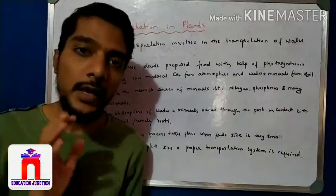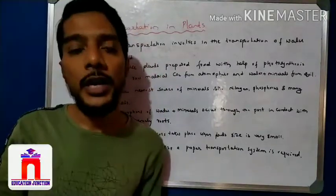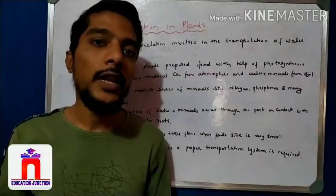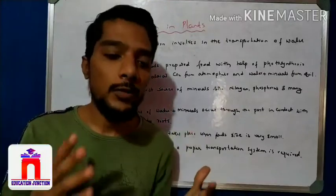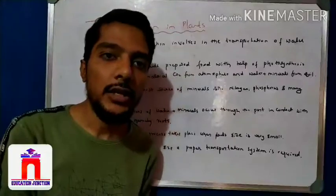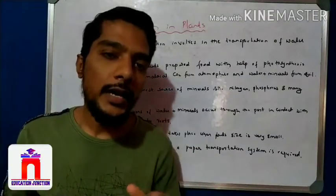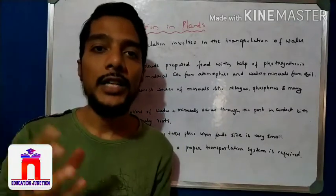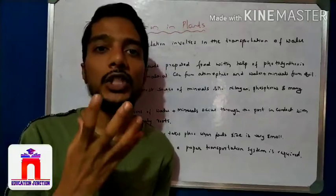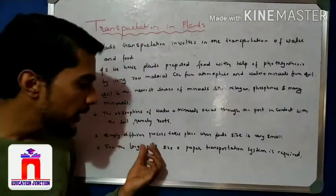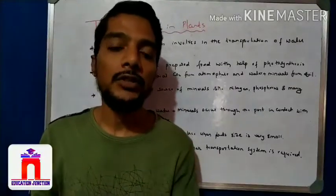When you come across very big trees — for example, coconut tree, banyan tree, mango tree — the distance between root and leaf is very large. In that condition, simple diffusion process will not be sufficient; it will be very slow. For large plants, a proper transportation system is required with proper vessels. As studied earlier, xylem tissue and phloem tissue are present in large plants and a proper system is required.